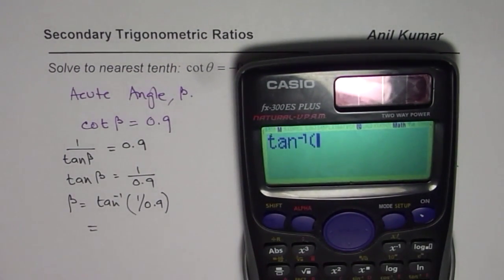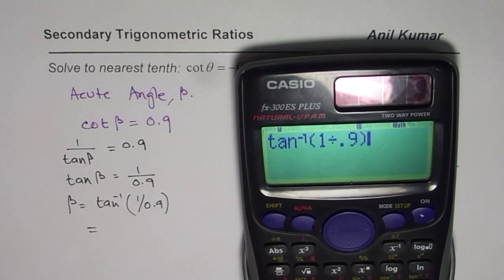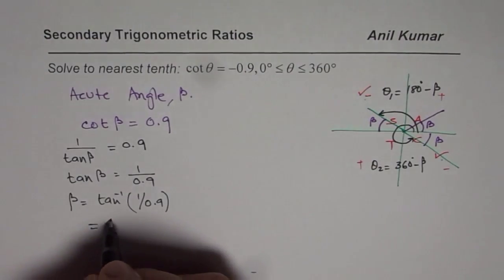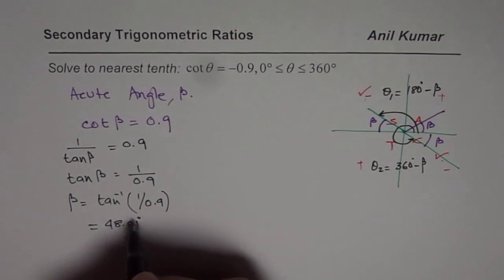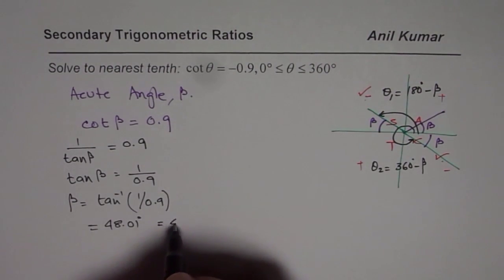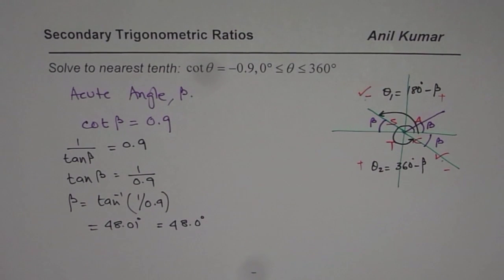So we can find this angle using the calculator. We have shift tan inverse within bracket 1 divided by 0.9, bracket close, equal to 48.01. So we have to round to tenth. That means we can round this answer to 48.0 degrees. So that is the answer for β.